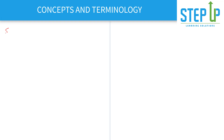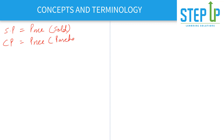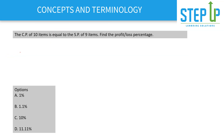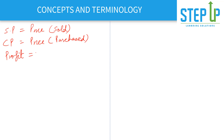First, let's familiarize with the concepts and terminology. SP is your selling price — the price at which you sell things. CP is your cost price — the price at which you bought or purchased things. Profit is the difference when your SP is greater than CP, so profit equals SP minus CP.